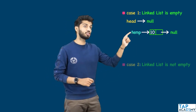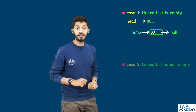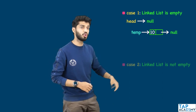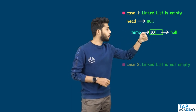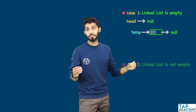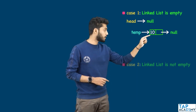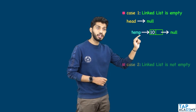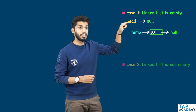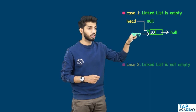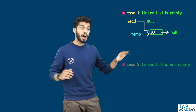Now, how do we handle the empty list scenario? We need to check if head is pointing to null. If head is pointing to null, it means the linked list is empty. If it is empty, the head should start pointing to this new node. Since 'temp' is already pointing to this node, all we have to do is place the same reference into head — so head equals temp. Head will automatically start pointing to this new node.